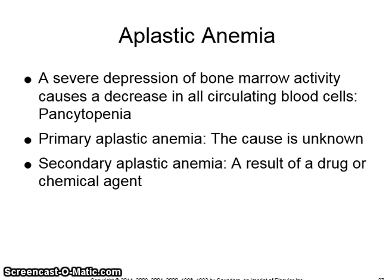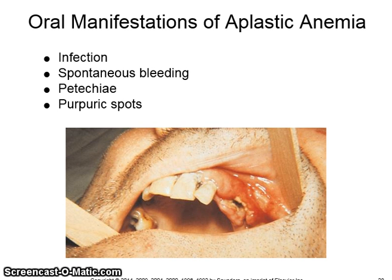Aplastic anemia is a severe depression of bone marrow activity, which causes a decrease in all circulating blood cells. The primary form's cause is unknown; the secondary form results from a drug or chemical agent. Oral manifestations include infection, spontaneous bleeding, petechiae, and purpuric spots.